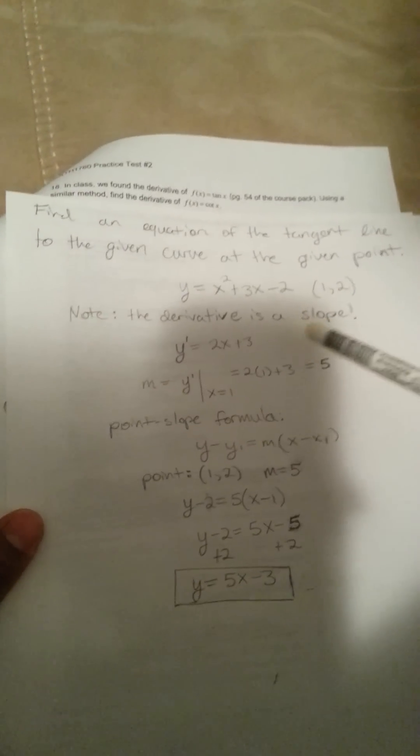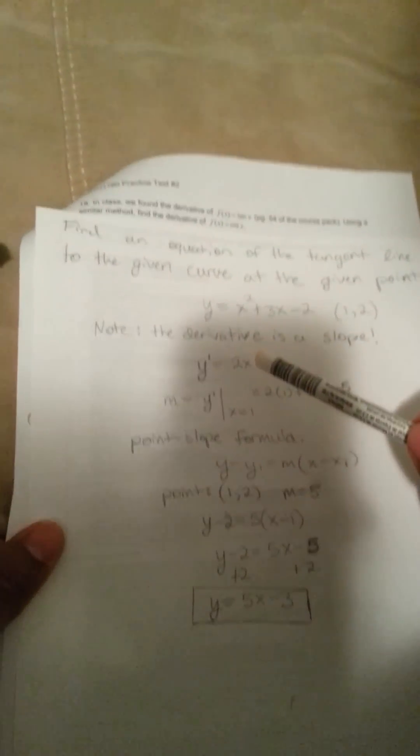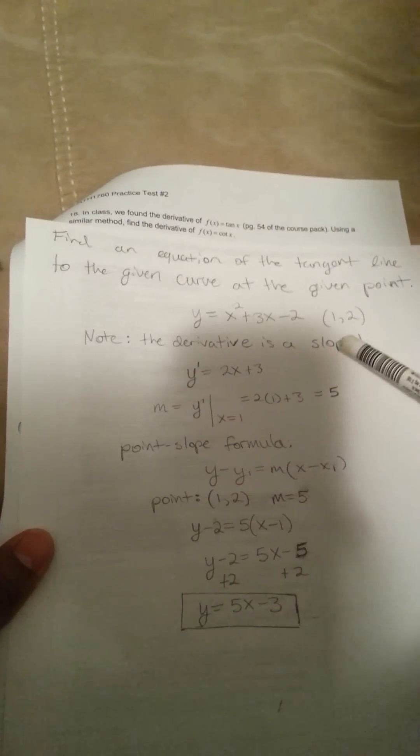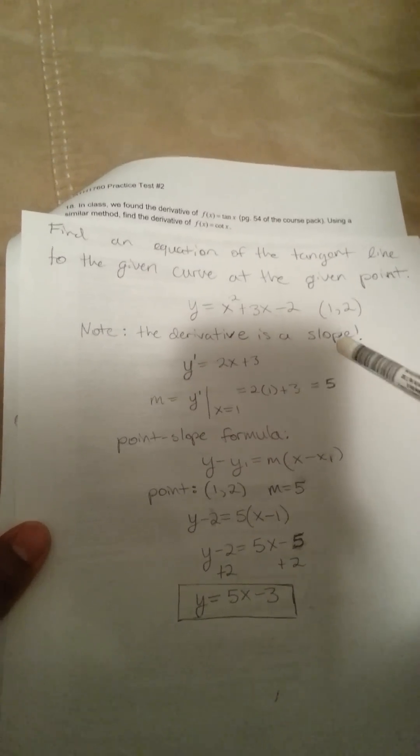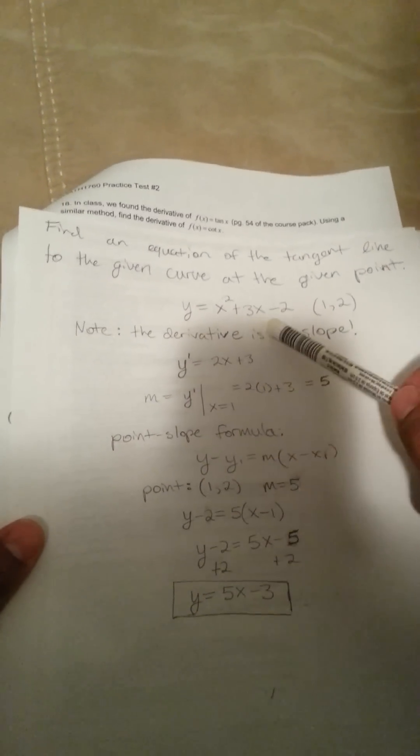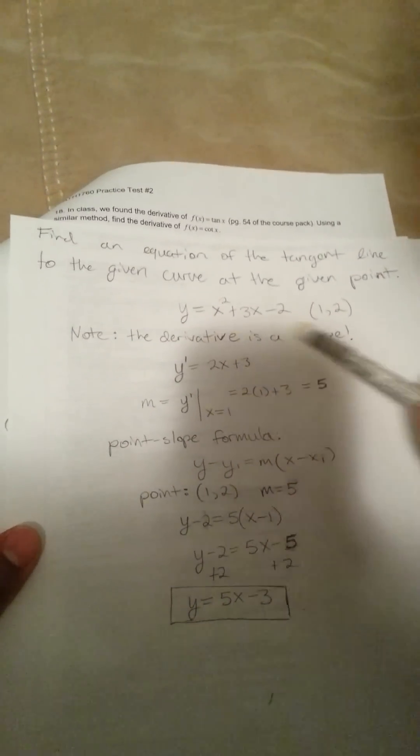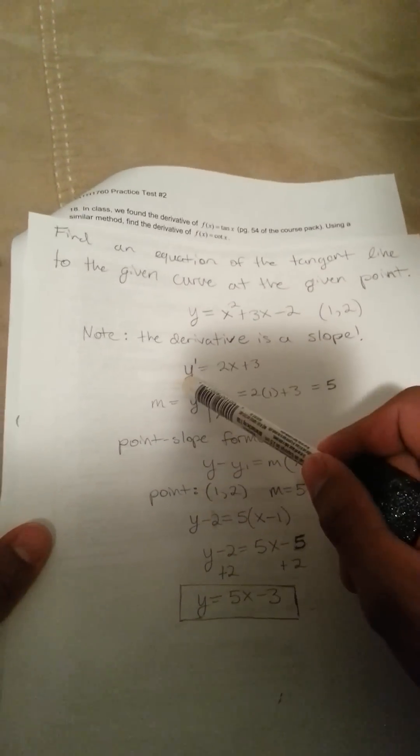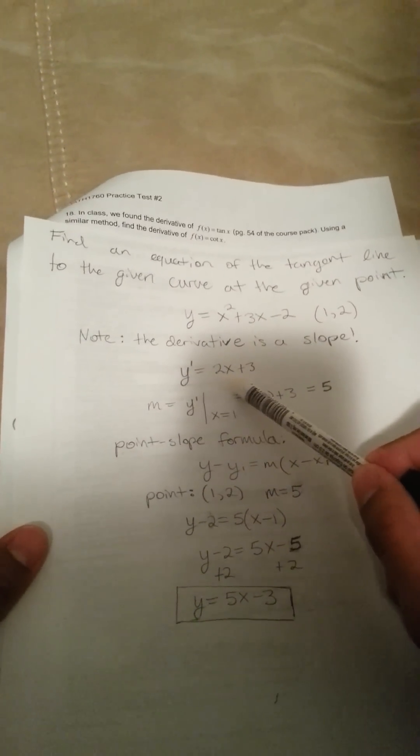The thing that we want to know is that the derivative is nothing more than a slope, and the first thing we have to do with this is take the derivative of it. So, what we get is y prime equals 2x plus 3.